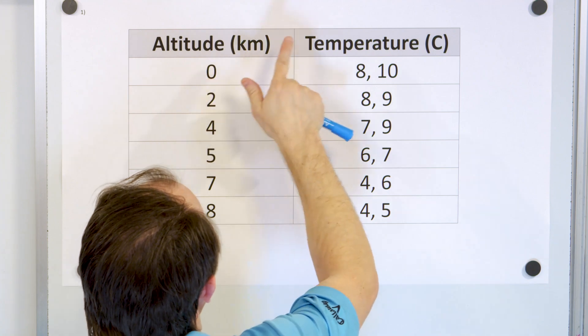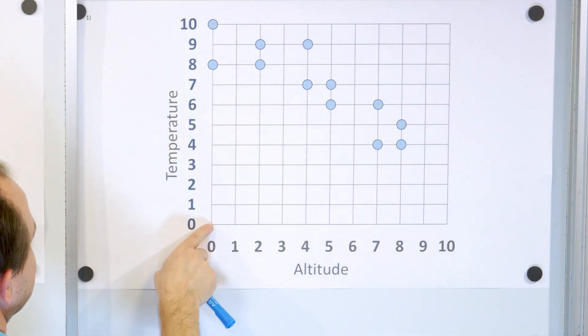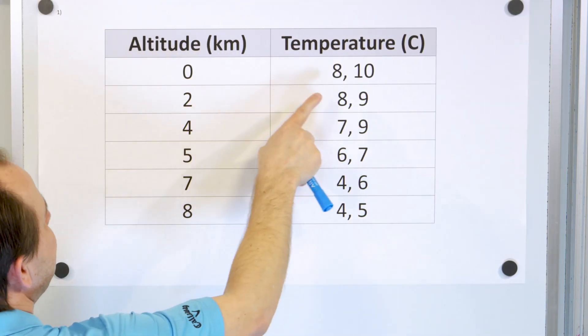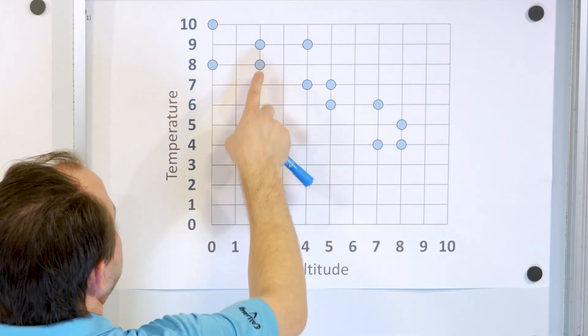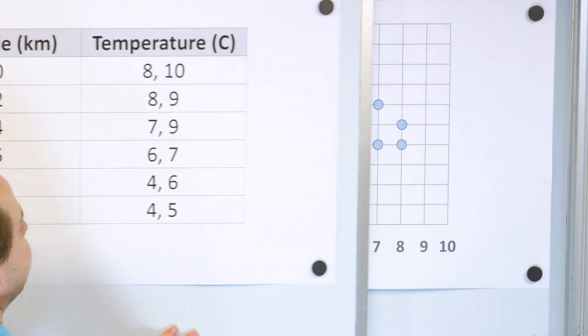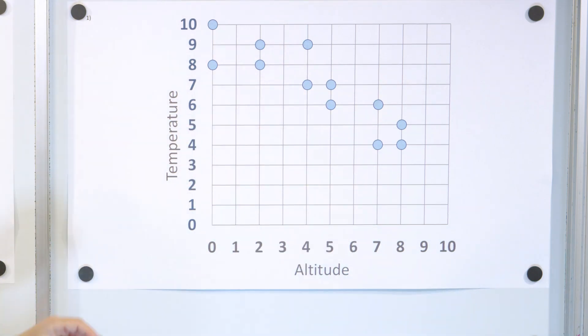So we plot it as points. Zero comma eight, zero comma ten. So I plot it here, zero comma eight, zero comma ten. Two comma eight, two comma nine, those are two separate points. I'll just show you one more. Four comma seven, four comma nine. All the rest of the data is plotted there as well.